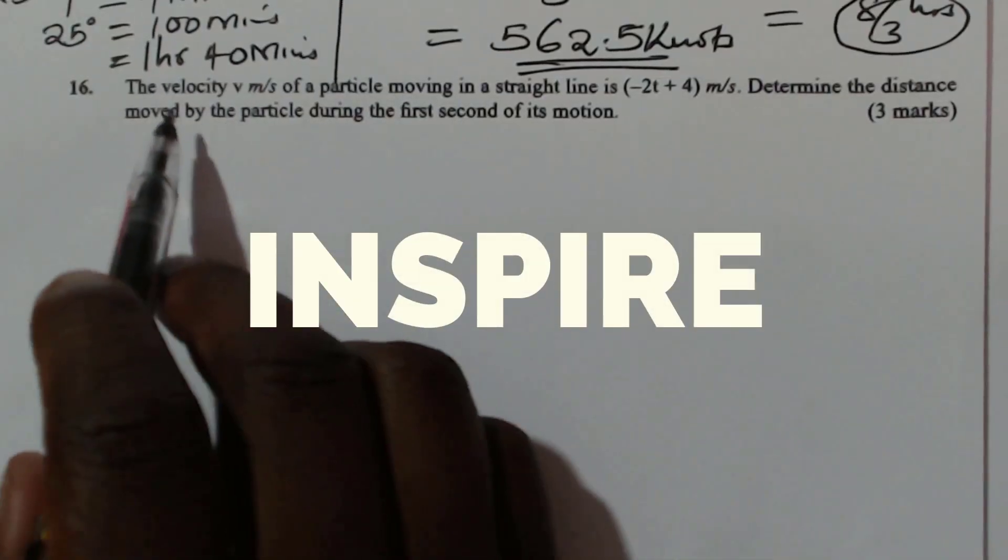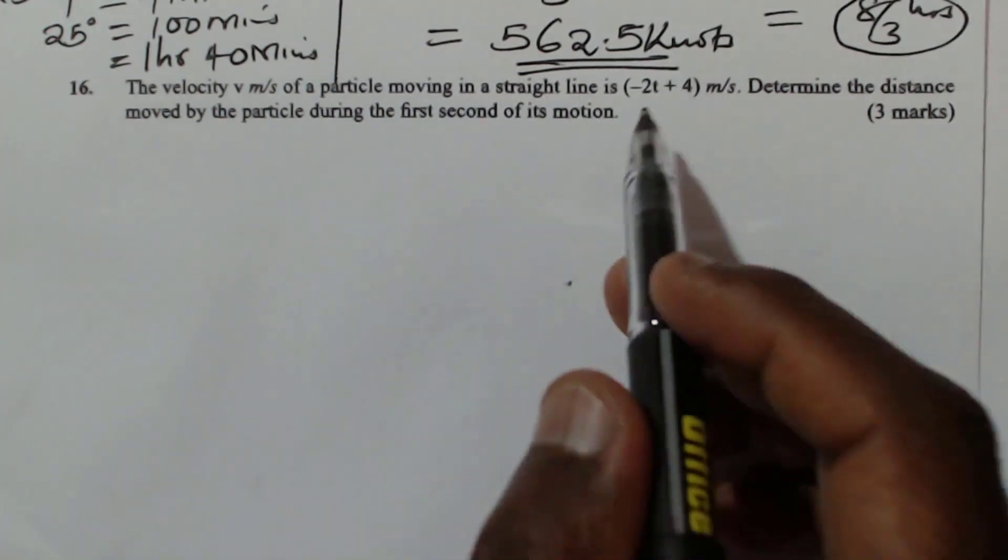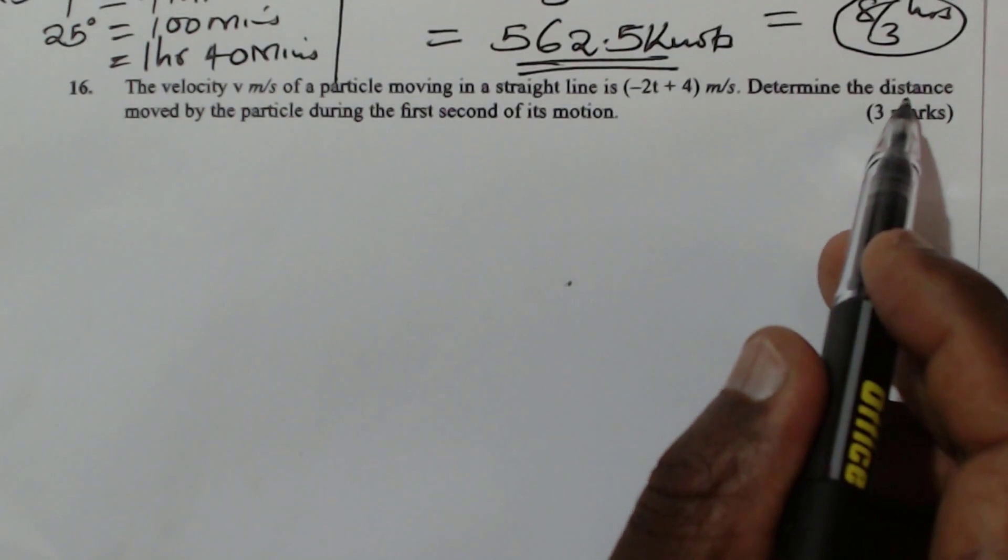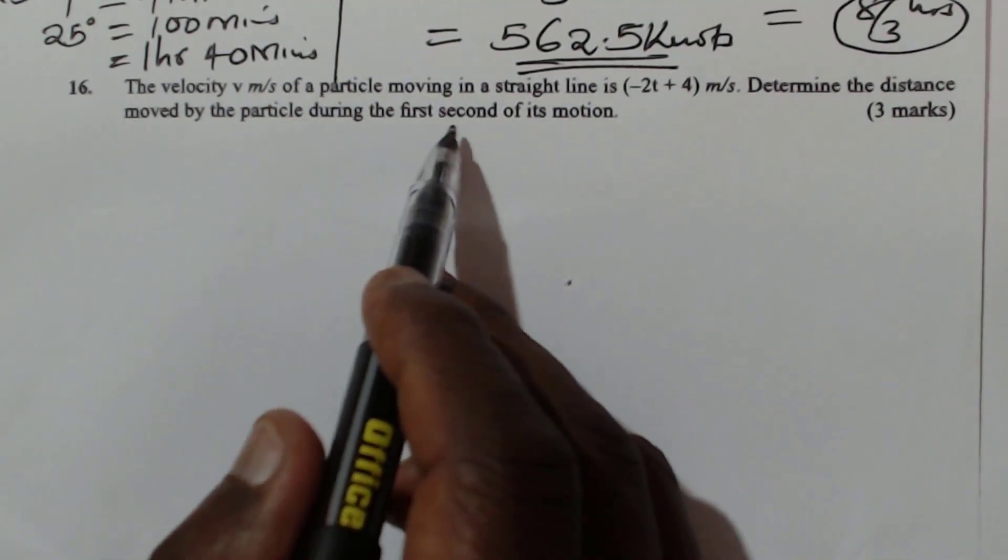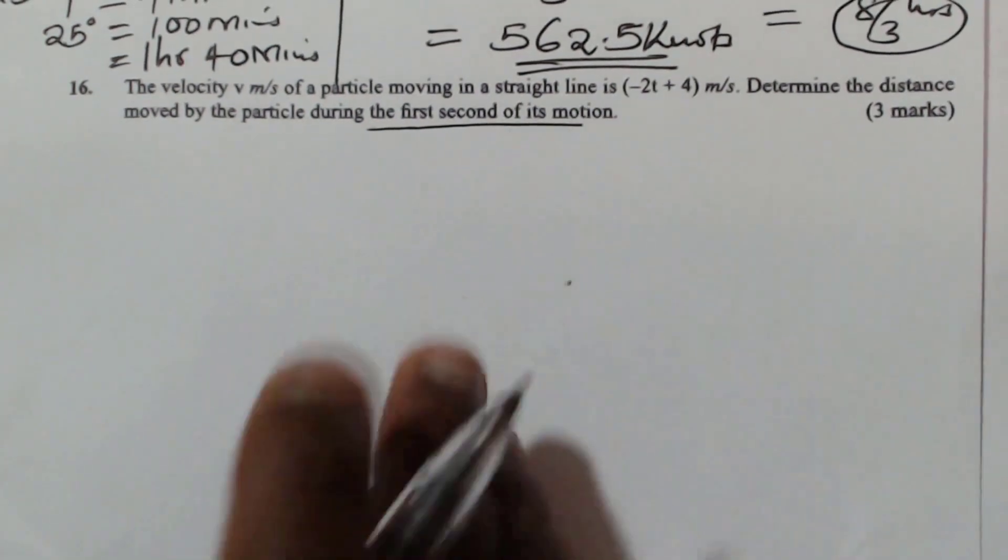Question number 16. The velocity v meters per second of a particle moving in a straight line is negative 2t plus 4 meters per second. Determine the distance moved by the particle during the first second of its motion.